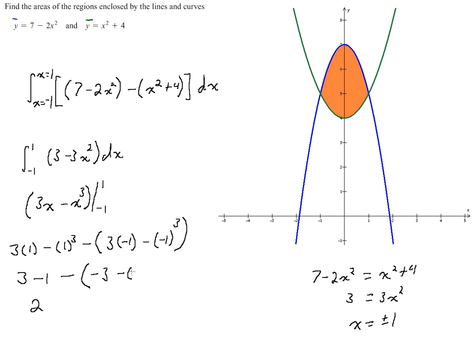So minus negative 3, negative 1 times negative 1 is positive 1. So I ended up having 2 minus negative 2, and then distributing that negative 1, I get 2 plus 2, and of course that equals 4.